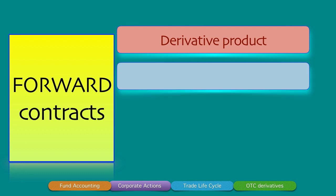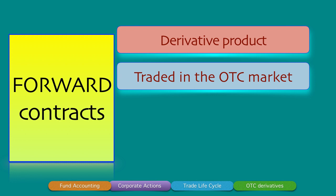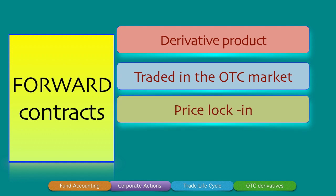A forward contract is traded in the OTC market — the over-the-counter market — which is largely used for providing customized and extremely well-designed structured products for both counterparties. Since it's not traded on an exchange, almost all forward contracts are settled through a central clearing counterparty. More about central clearing counterparty will be discussed in another video. The price is locked in today for delivery that takes place sometime in the future.